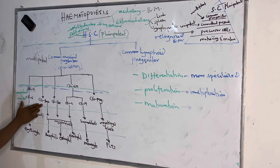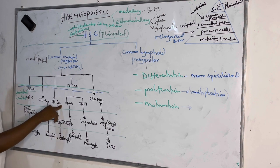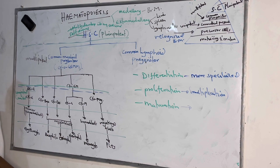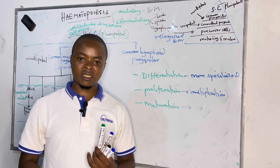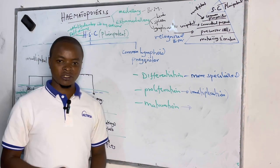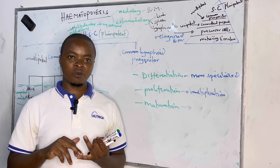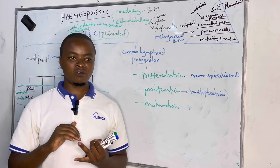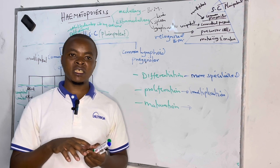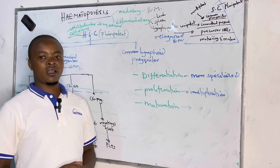The CFU-basophil, CFU-eosinophil, and CFU-granulocyte all share the same precursor: the myeloblast. All of them undergo the same stages of granulopoiesis to give rise to basophils, eosinophils, and neutrophils. The myeloblast gives rise to the promyelocyte — which is the largest — then the myelocyte, then metamyelocyte, then the stab or band cell, which gives rise to the segmented granulocyte. Those are the stages of granulopoiesis.